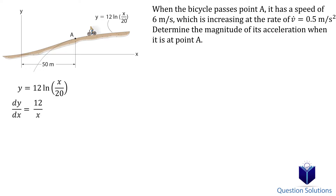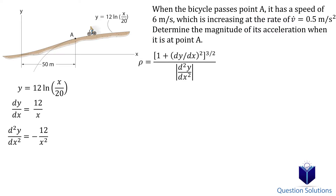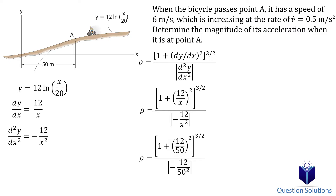Let's do the first derivative, and now the second derivative. Now we can plug these into the radius of curvature equation. We also know the x value at point A, which is 50 meters. Let's substitute and solve to get the radius.